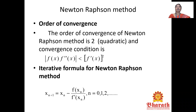The iterative formula for Newton-Raphson Method is: x_{n+1} = x_n − f(x_n) / f'(x_n), where n varies from 0, 1, 2, 3, etc. This formula is used to apply the Newton-Raphson Method iteratively.